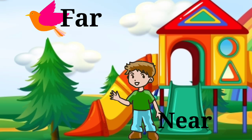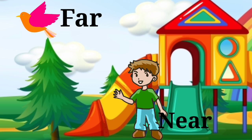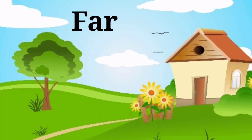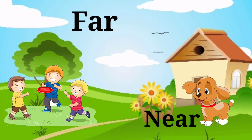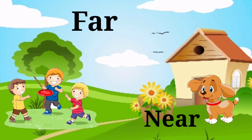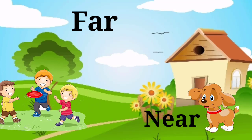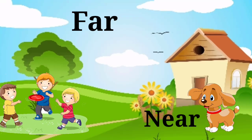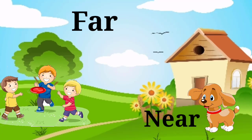In the next picture you can see slides, a boy, and a bird. We can say that the boy is near the slides and the bird is far from the slides. In this picture you can see a dog, a house, and children. We can say the dog is near the house and the children are far away from the house.